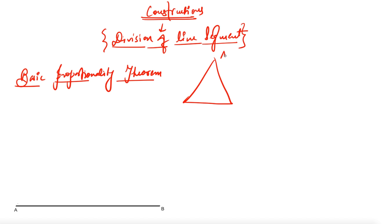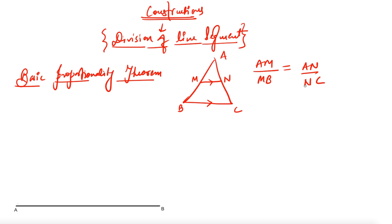BPT says that if you have a triangle ABC and if I'm drawing a line from one side to another side which is parallel to the third side — say this point is M and this point is N — then this line divides both sides in equal ratio. That is, AM/MB will be equal to AN/NC. This is the Basic Proportionality Theorem.